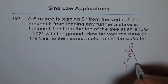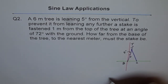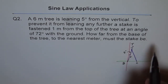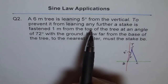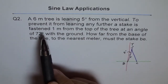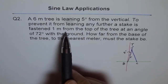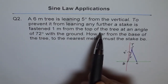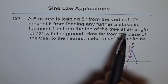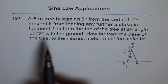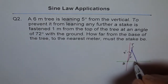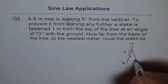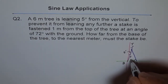The stake goes from that point to the ground. Let's call the ground anchor point C. To prevent the tree from leaning any further, the stake is fastened one meter from the top at an angle of 72 degrees with the ground — so this angle at C is 72 degrees.